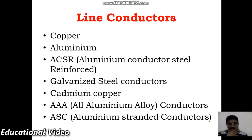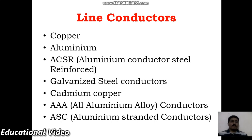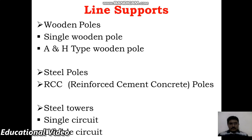For transmission and distribution purposes, the different line conductors used are copper, aluminum, ACSR (Aluminum Conductor Steel Reinforced), GI (Galvanized Steel Conductor), cadmium-copper, AAA (All Aluminum Alloy Conductors), and ASC (Aluminum Stranded Conductors).